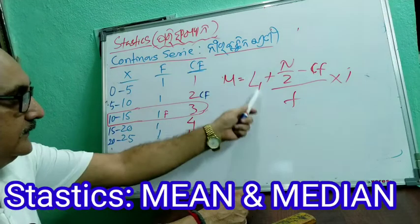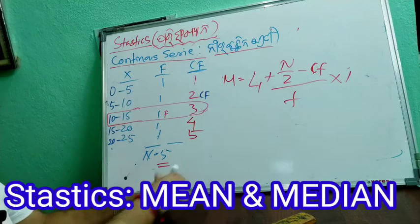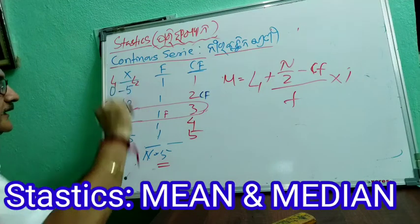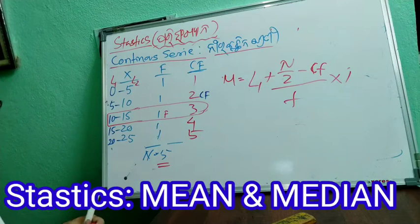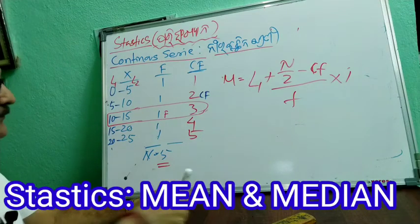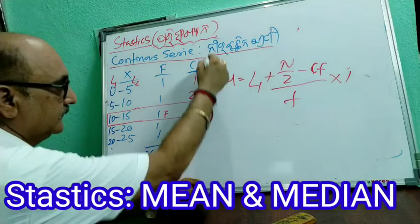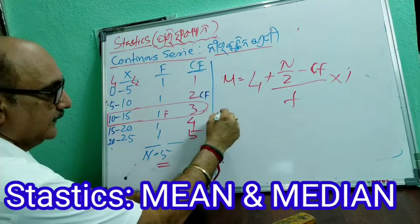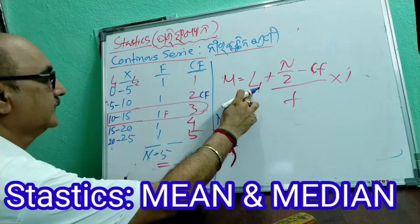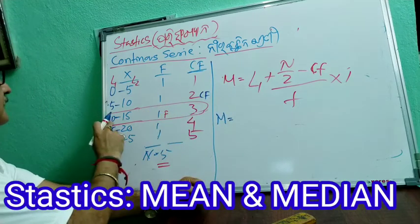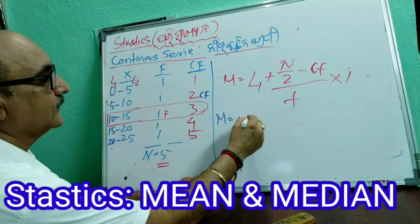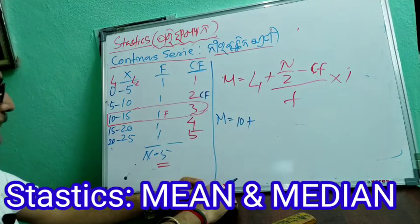L1 and L2 will be given to you. So we have the formula here. M is equal to L1, so it is 200, plus N by 2.